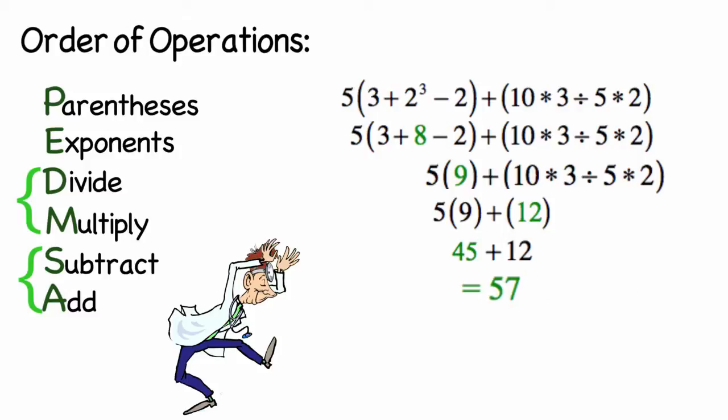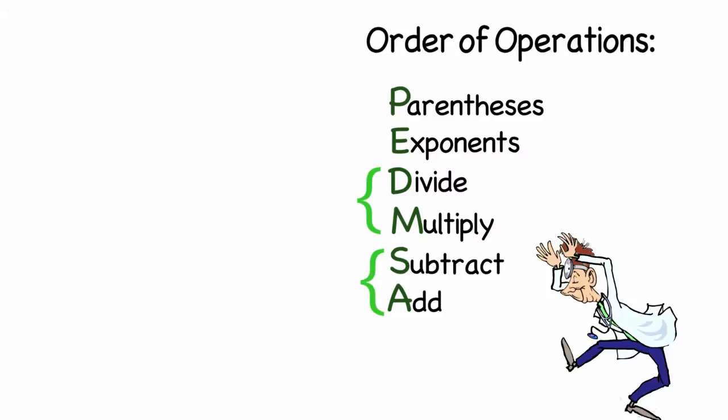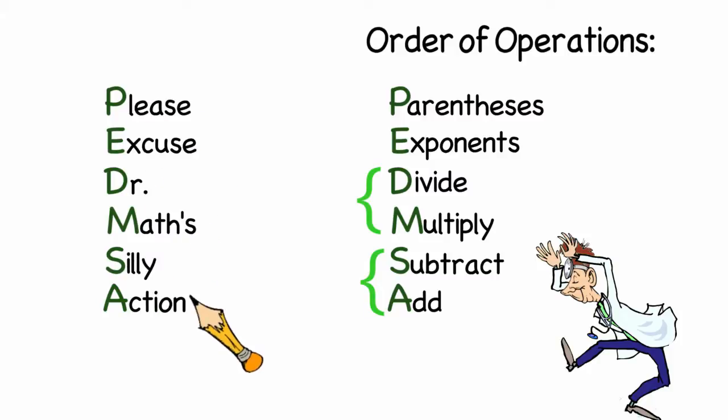To help us remember the order that we should be working in, we can use the first letter of each operation. P-E-D-M-S-A. You can create a mnemonic to help you remember this rule. Or you can use ours. Please excuse Dr. Math's silly actions. This can help you remember the order in which you should perform the operations. But don't forget, you need to do all the dividing and multiplying from left to right, and then the subtracting and adding from left to right.